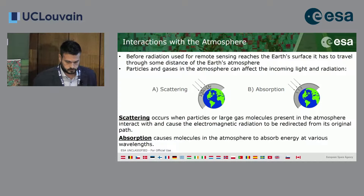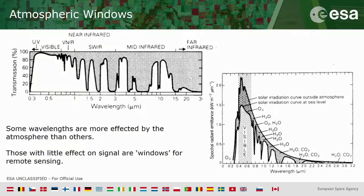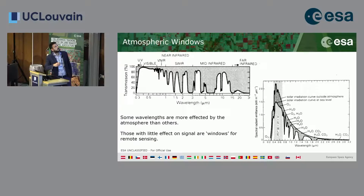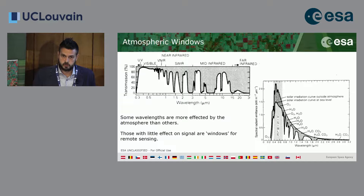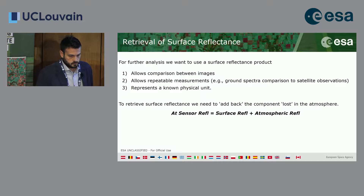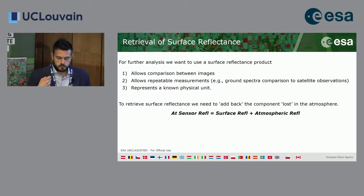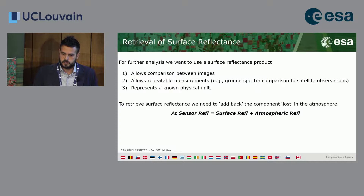The Sentinel-2 spectral range spans from about 0.4 microns to 2 microns, covering many atmospheric windows. Sentinel-2 has three bands at 60 meters: Band 1 for coastal aerosol, Band 9 for water vapor correction, and Band 10 for cirrus.